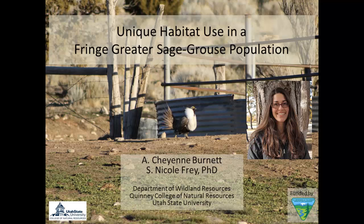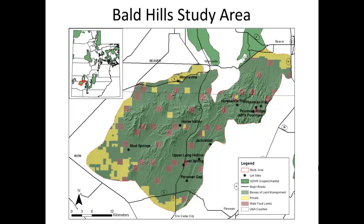We're going to get right into the population of greater sage-grouse that I've been studying for the last two years. The population I'm looking at is in southwestern Utah. It primarily occupies BLM land and is on the fringe of the greater sage-grouse species distribution range-wide. Being on the fringe of a population in decline, it may be under more threat of extinction than more centralized populations.